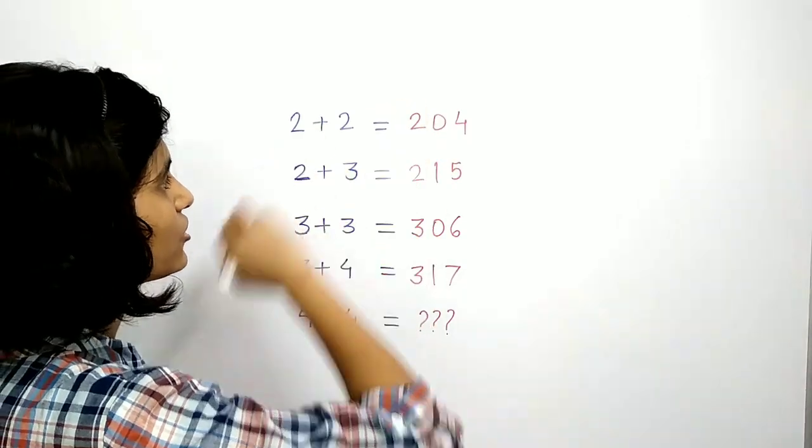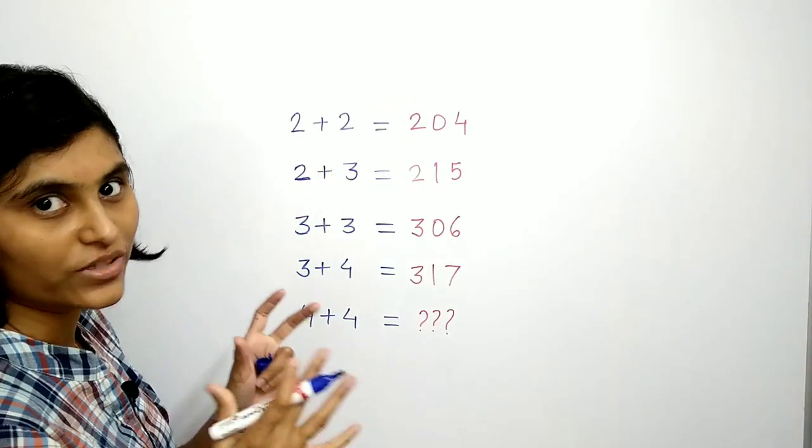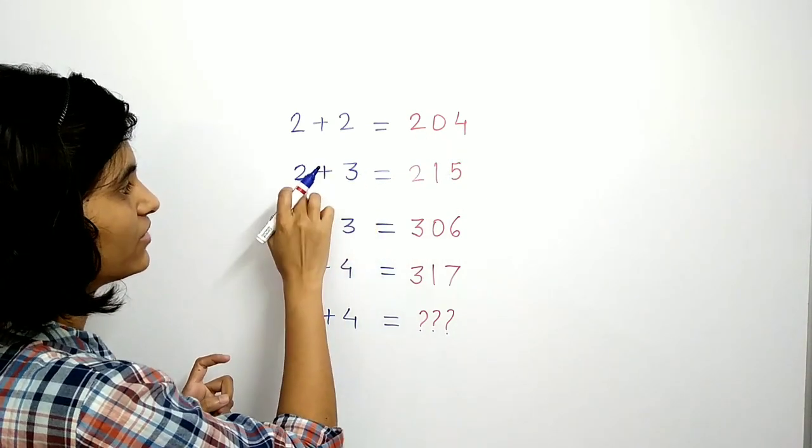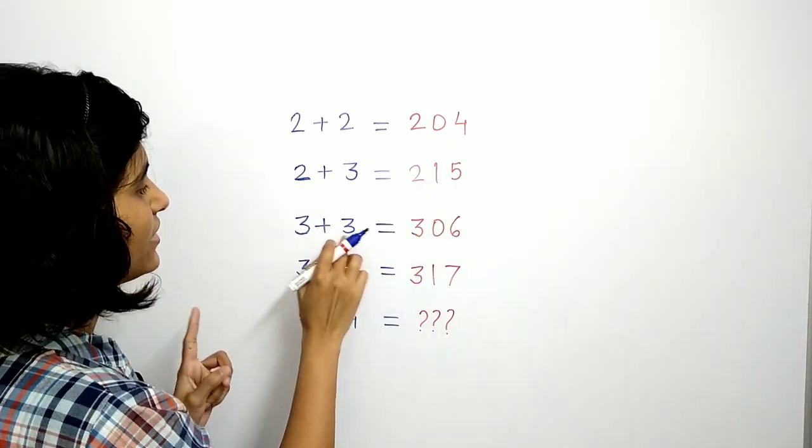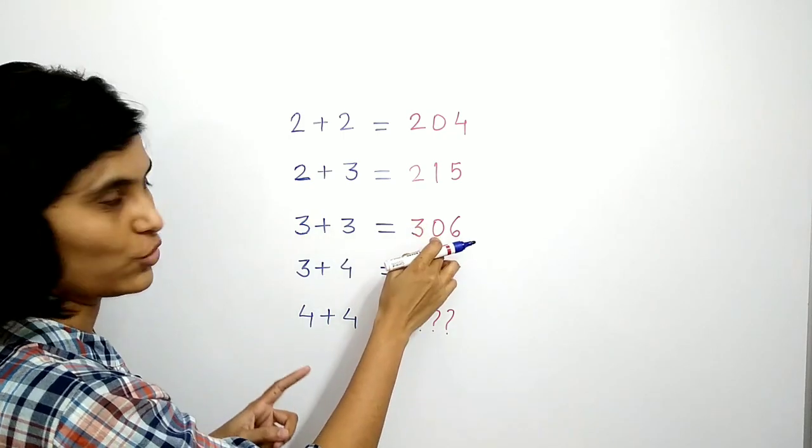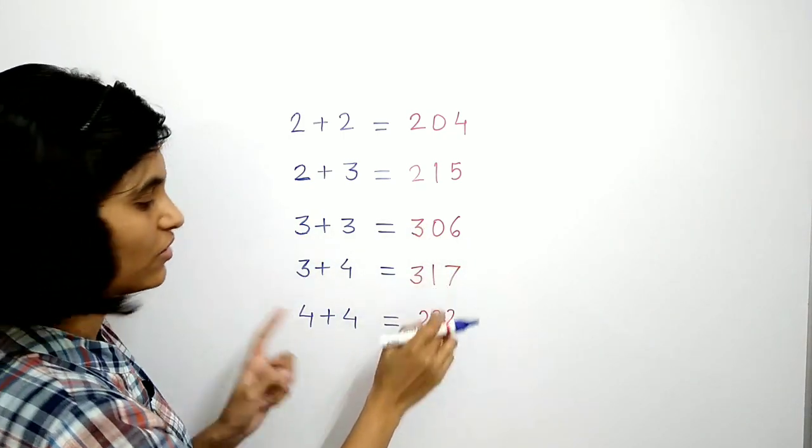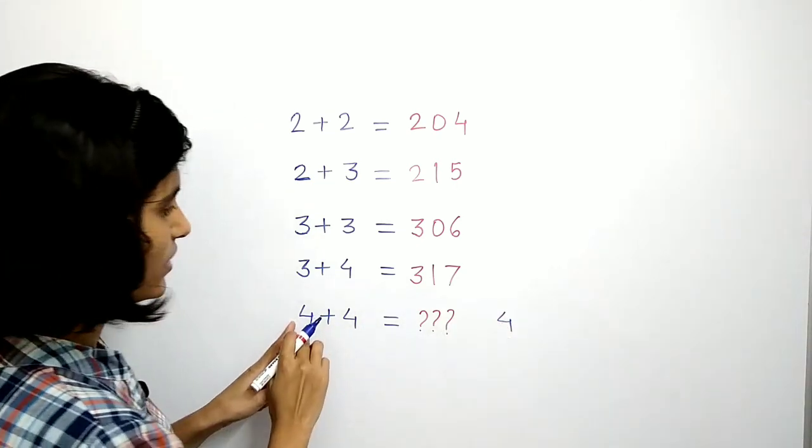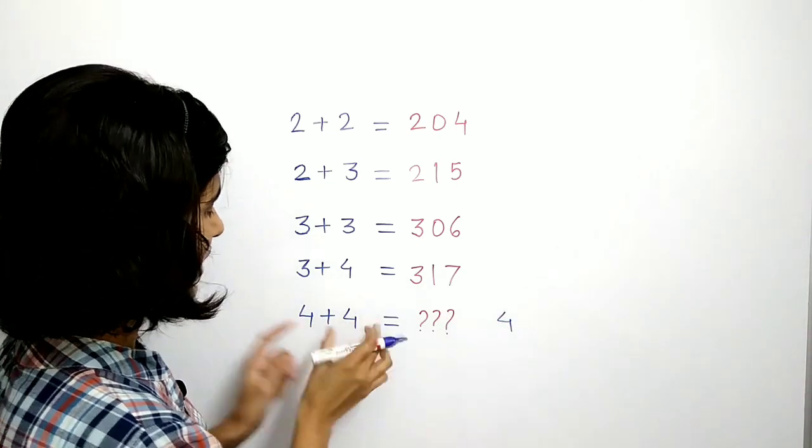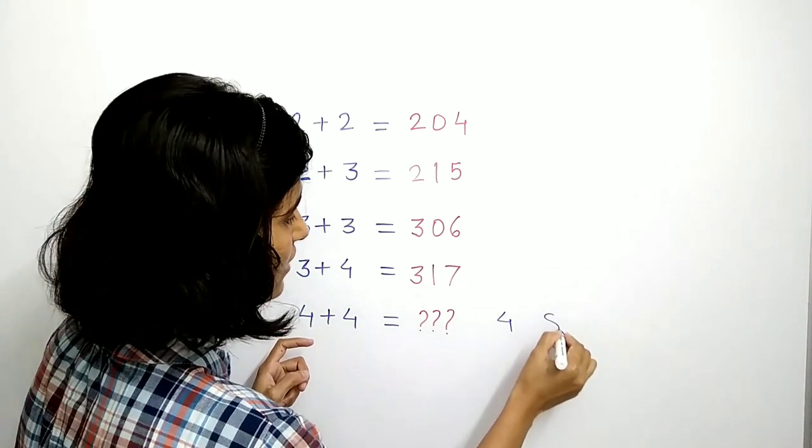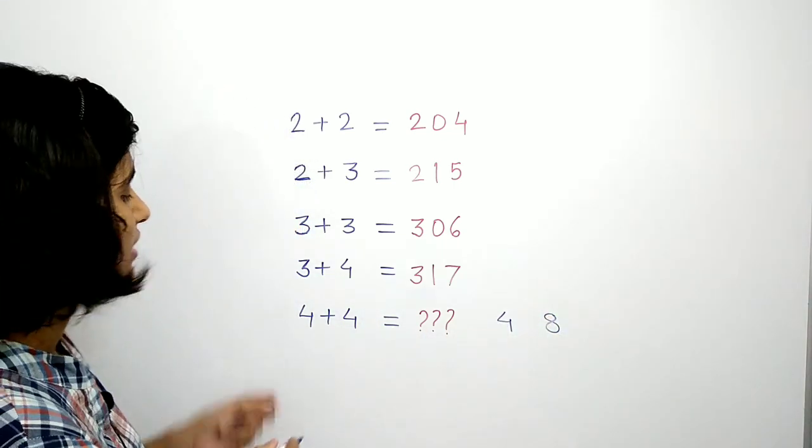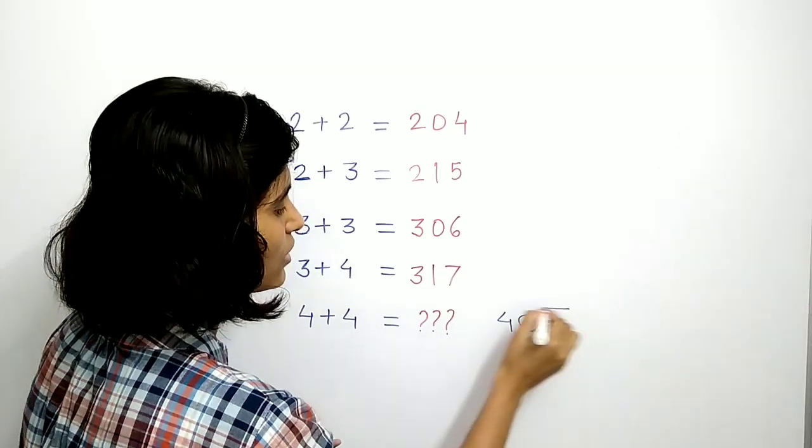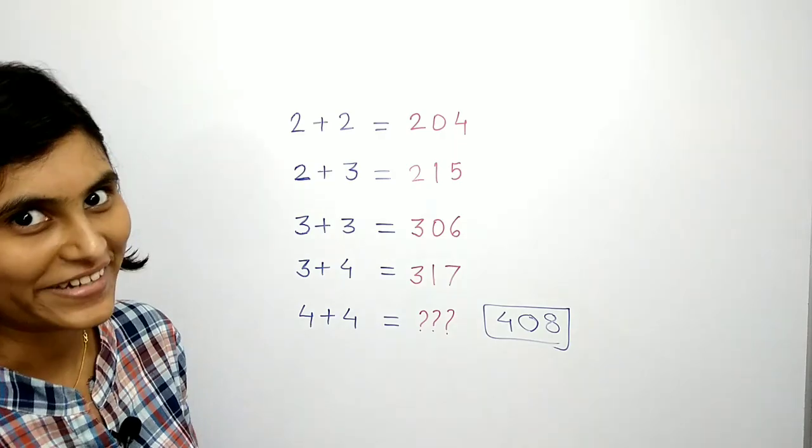And for this middle digit, here we take the difference which is 2 minus 2 is 0, then 3 minus 2 is 1, then 3 minus 3 is 0, then 4 minus 3 is 1. So for this, the answer is take this number as it is 4, then add this 2, this is the last which is 8, right. And take the difference which is 4 minus 4 that is 0. So the answer is 408.